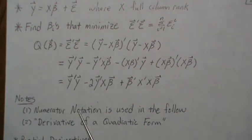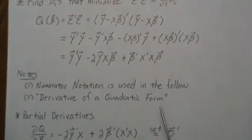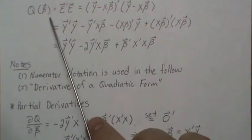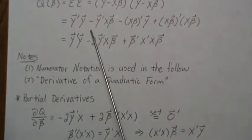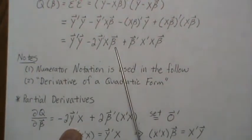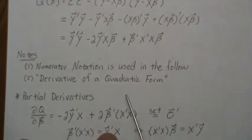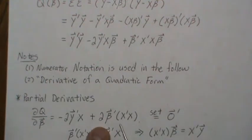I am driving everything in this video using the derivative of a quadratic form. Now let's take the partial derivatives of q with respect to beta. There are no betas in the first term, so it's constant and goes away. The derivative of the next term with respect to beta is just what's out front. The derivative of the quadratic term with respect to beta is 2 beta prime X transpose X.